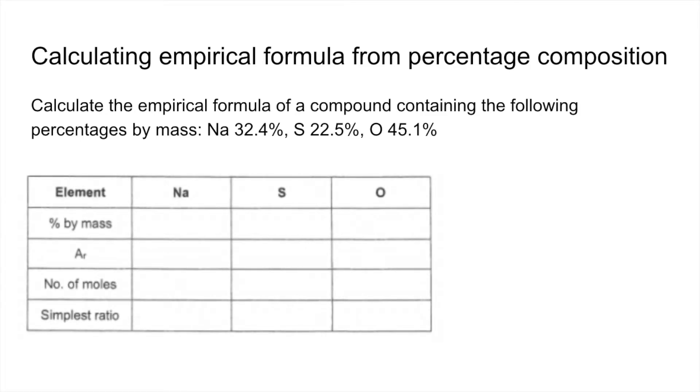Great thing about this is the methods are exactly the same. So all we're doing here is we're assuming for every 100 grams, we've got 32.4 grams of sodium, 22.5 grams of sulfur, and 45.1 grams of oxygen. So we're just putting the percentages in now.